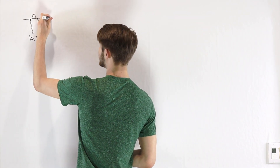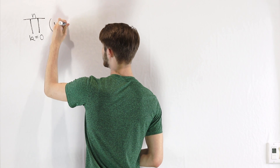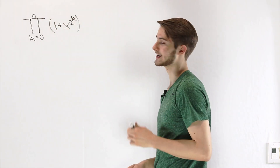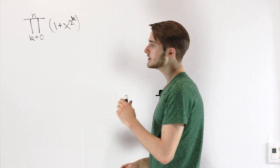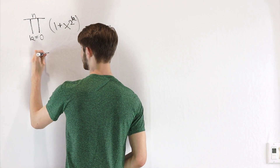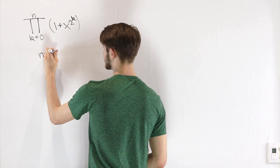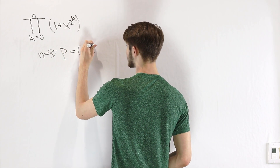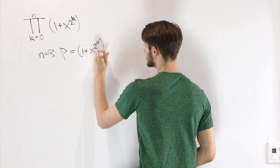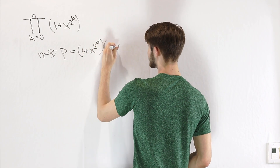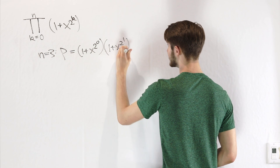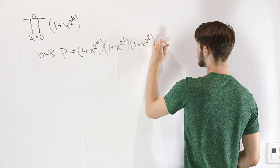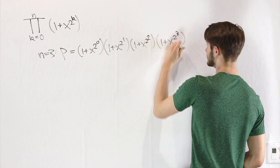Let's say we wanted to take that product with our function being 1 plus x to the power of 2 to the k. Let's see what that would look like for a particular value — say we had n equals 3. In that case, our product p would be (1 plus x to the 2 to the 0) times (1 plus x to the 2 to the first) times (1 plus x to the 2 to the second) times (1 plus x to the 2 to the third).